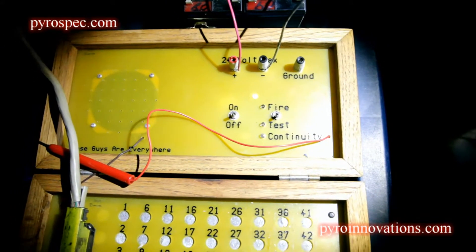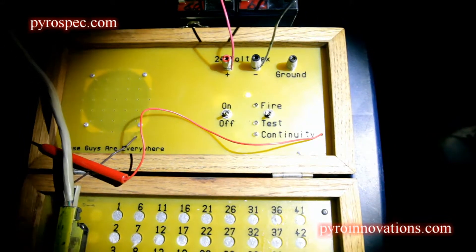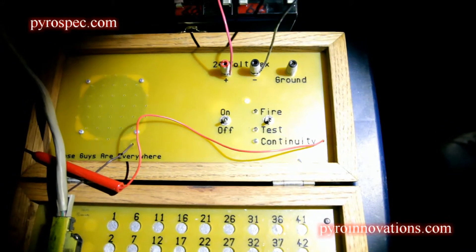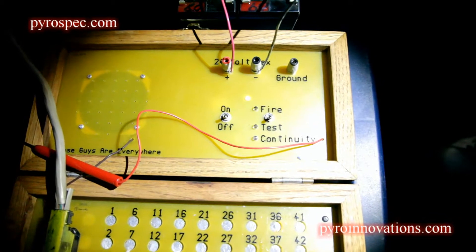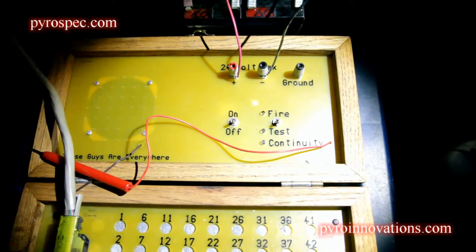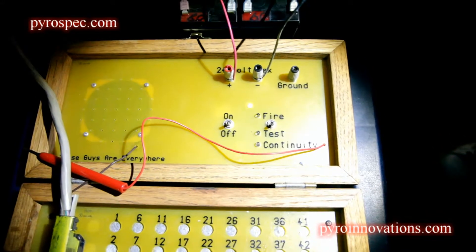Usually orders of magnitude lower. That way you're testing the completeness of your circuits out in the field without sending any type of current that could potentially fire the electric match.